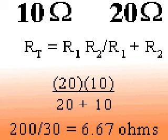Note that the total equivalent resistance in a parallel circuit is always less than the value of any of the individual resistors. Conversely, in a series circuit, the total resistance is always greater than that of any one resistor.